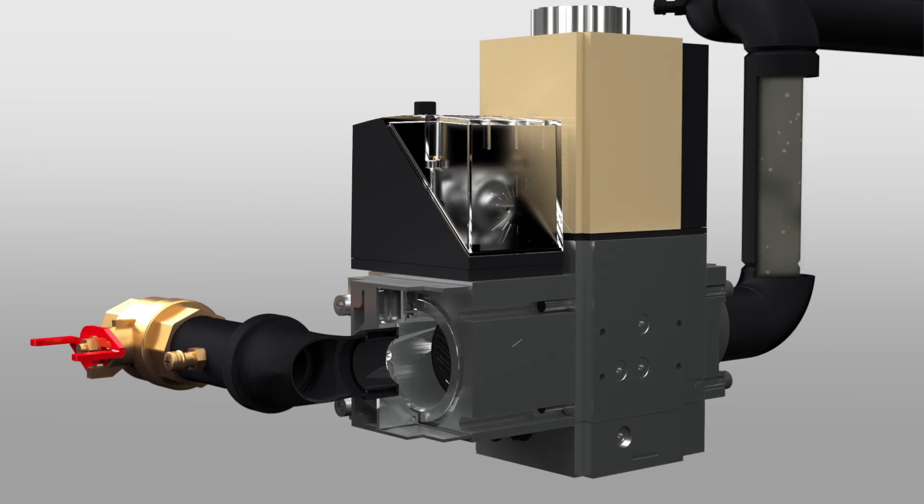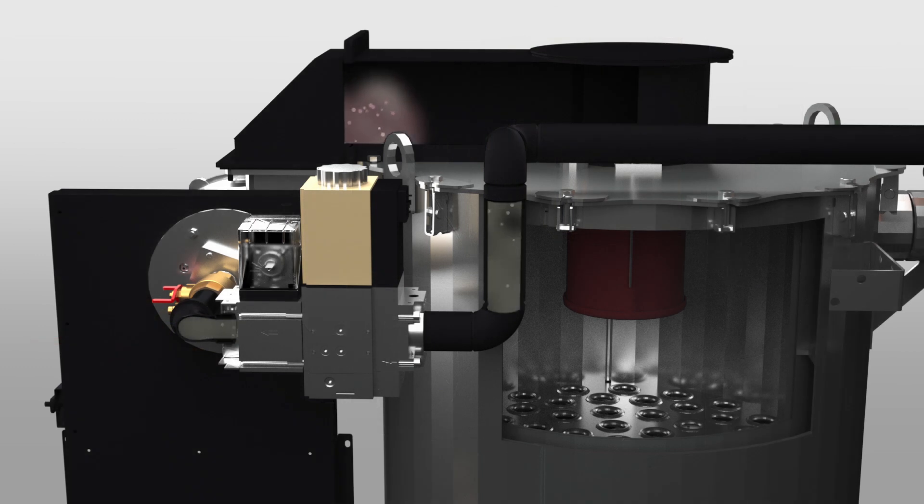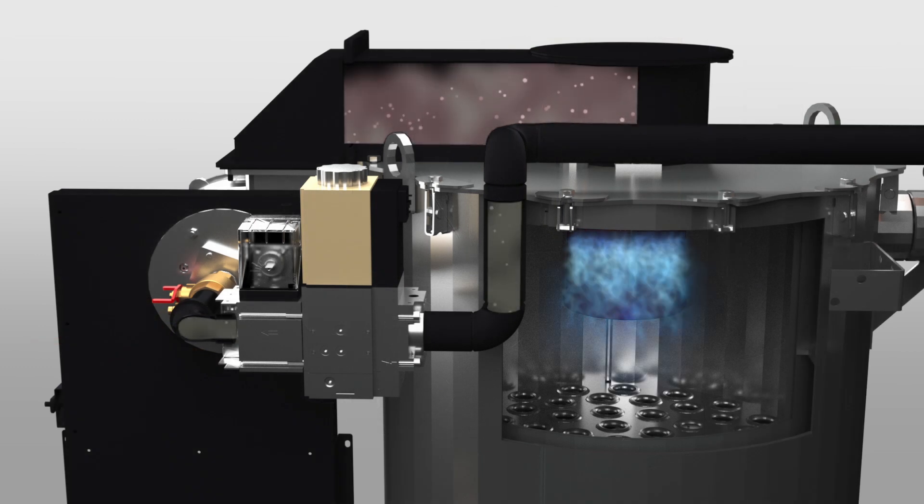Fuel gas is fed to the system and passes through a manual gas valve and the modulating gas valve before being mixed with air and fed to the combustion chamber.